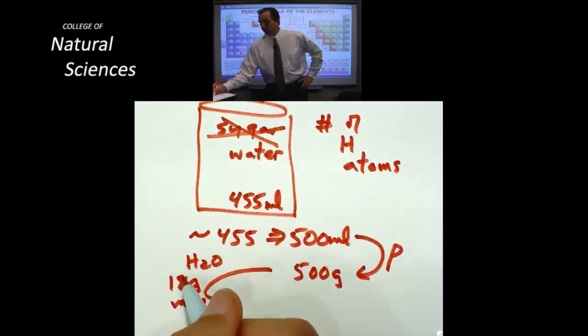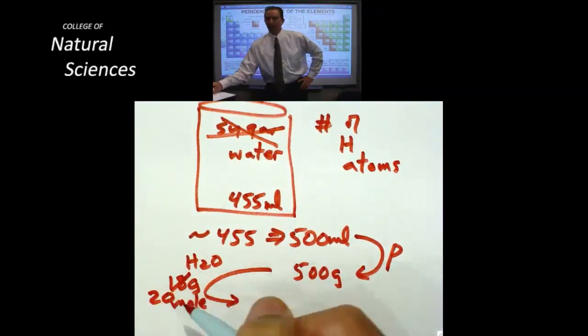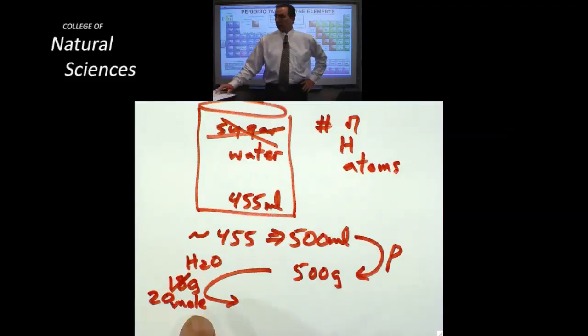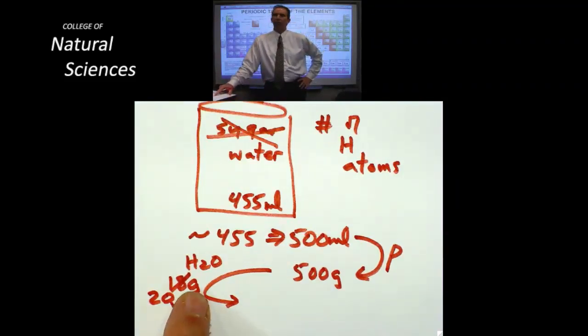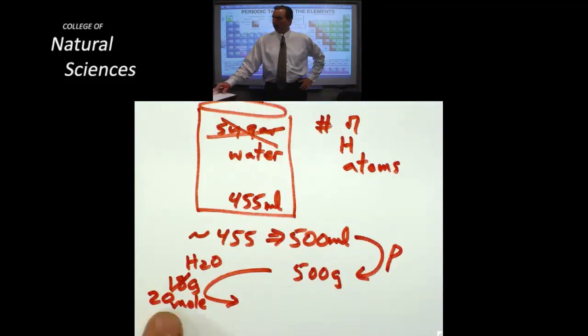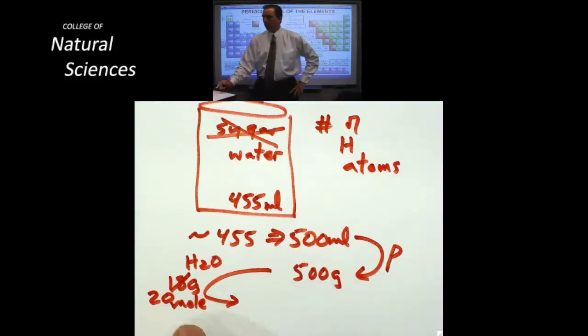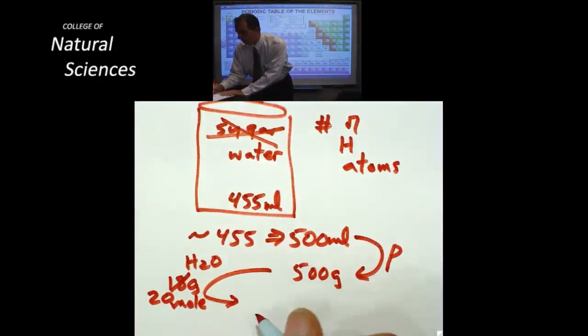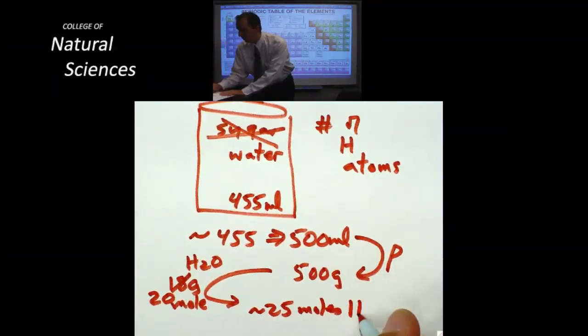In fact I am going to make this really simple on myself. And again you are going to hate yourself for having to follow along like this. But since I don't have my calculator I am going to say that the number 18 is the number 20. Because I can divide 20 into 500 pretty easily. If there are 500 grams and 20 grams per mole this suggests that there are approximately 25 moles of water in that container.